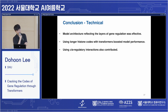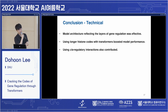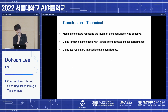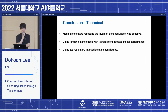So far, we can draw technical conclusions: first, Chromoformer's performance is good; second, longer histone codes with transformers were effective; and finally, cis-regulatory interactions were actually contributing to the model.